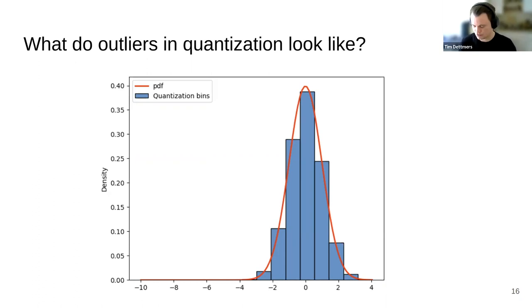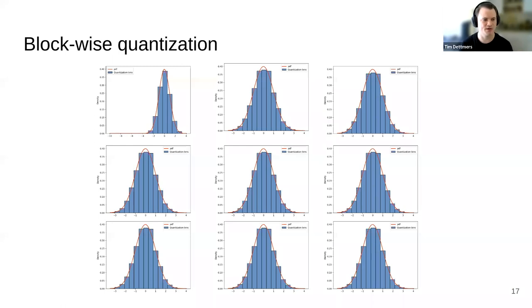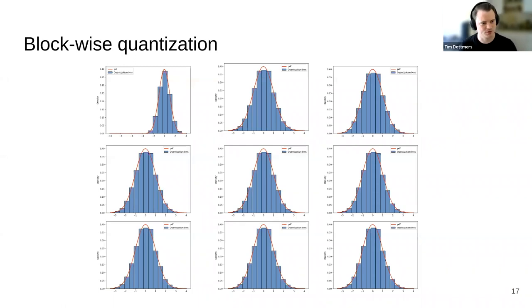To overcome this problem, we chunk the Adam states into blocks and treat each block independently, quantizing it independently. If an outlier is in a certain block, it affects only that block's absolute maximum value and quantization. Because everything is independent, the other blocks are unaffected. The smaller the block size, the more we can isolate outliers. With this, 8-bit optimizers become much more stable.